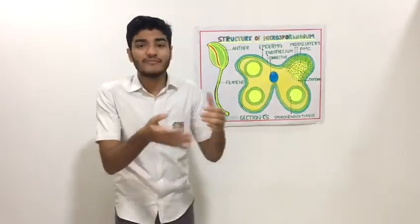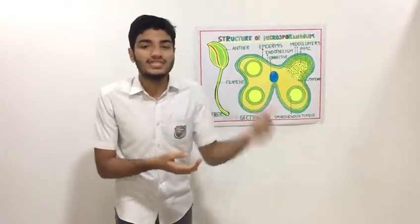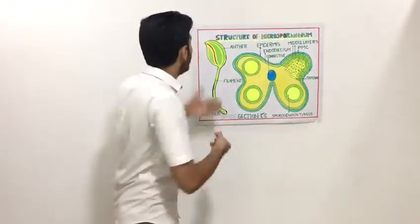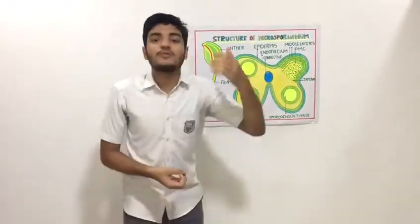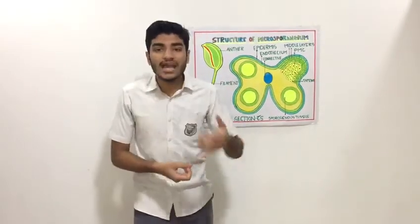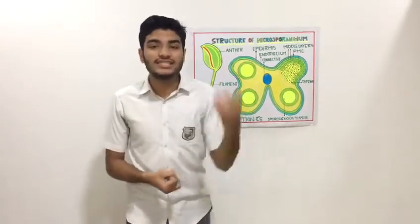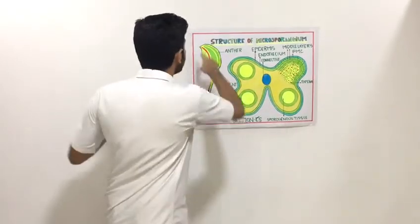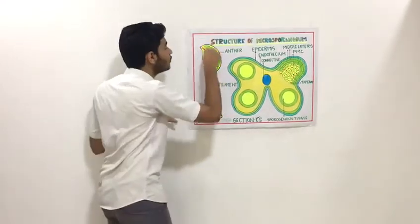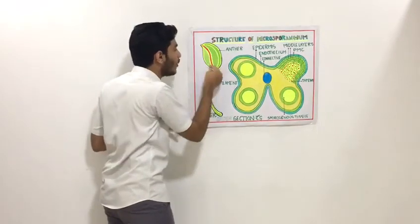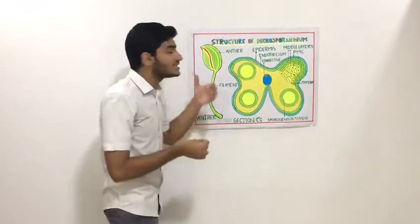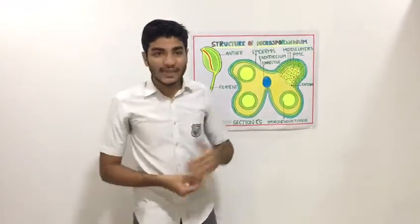Let's consider the anther in detail. The typical angiosperm anther is generally bilobed and at a stage of dehiscence, and has a longitudinal groove that runs lengthwise, a bit separating the thecae.